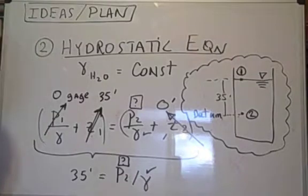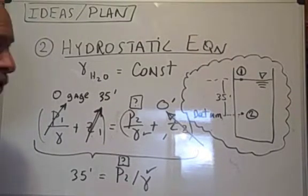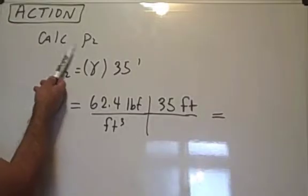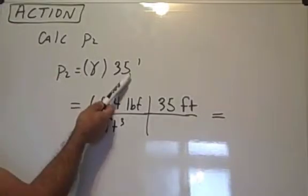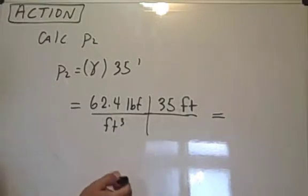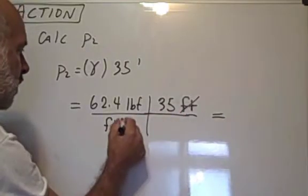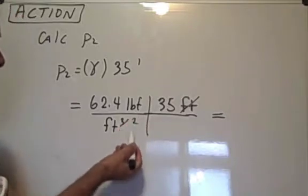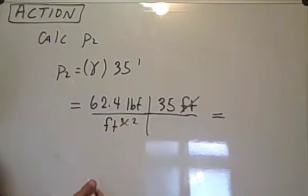That's known. One equation, one unknown. Our thinking is done. Let's go on to action. We have an equation for calculating the pressure at depth two. Here's the equation. We put in the value of specific weight, and here's the resulting equation. Feet cancels, that becomes foot squared. Our units become pounds force per foot squared, which is a pressure unit.